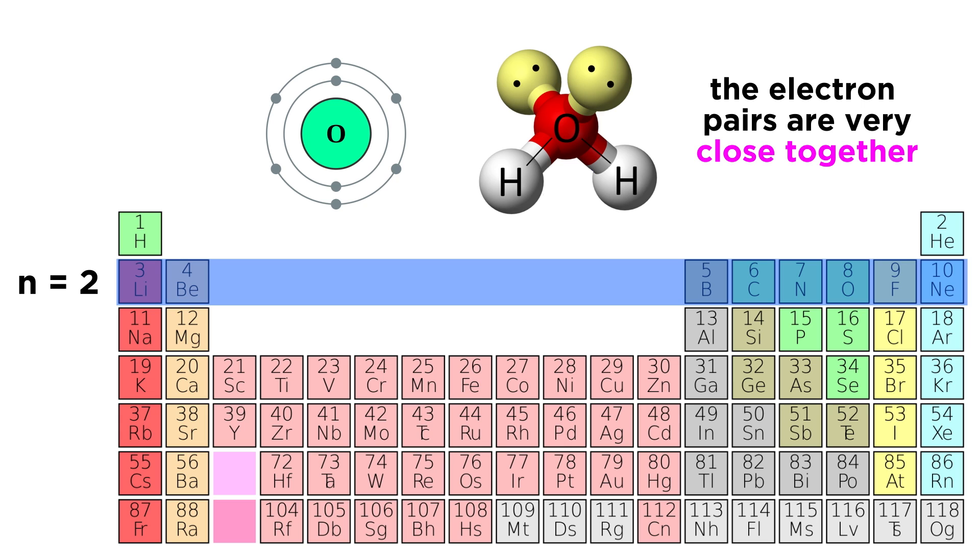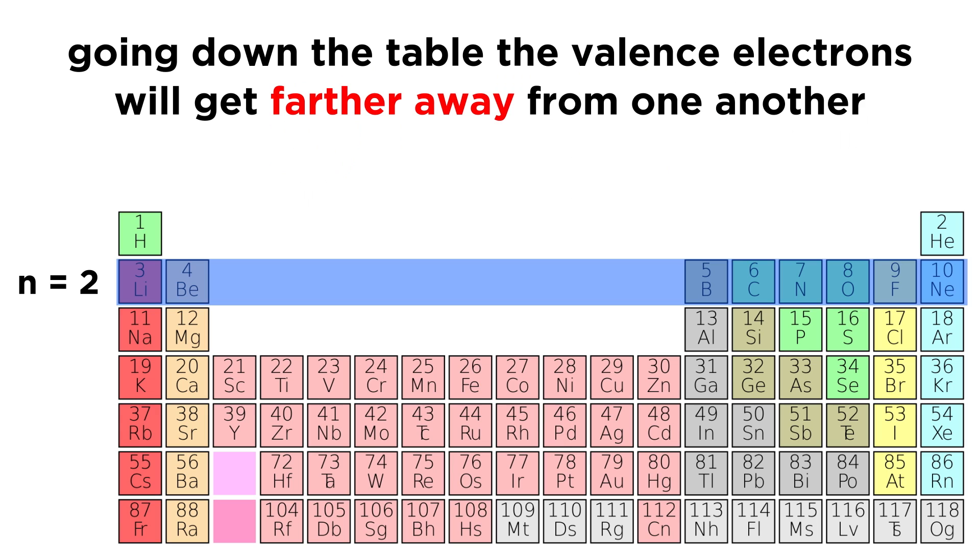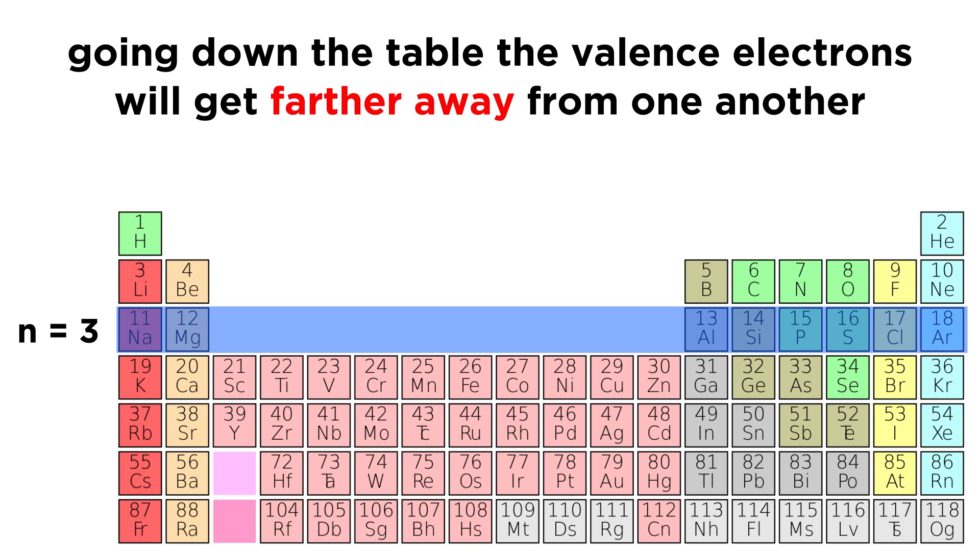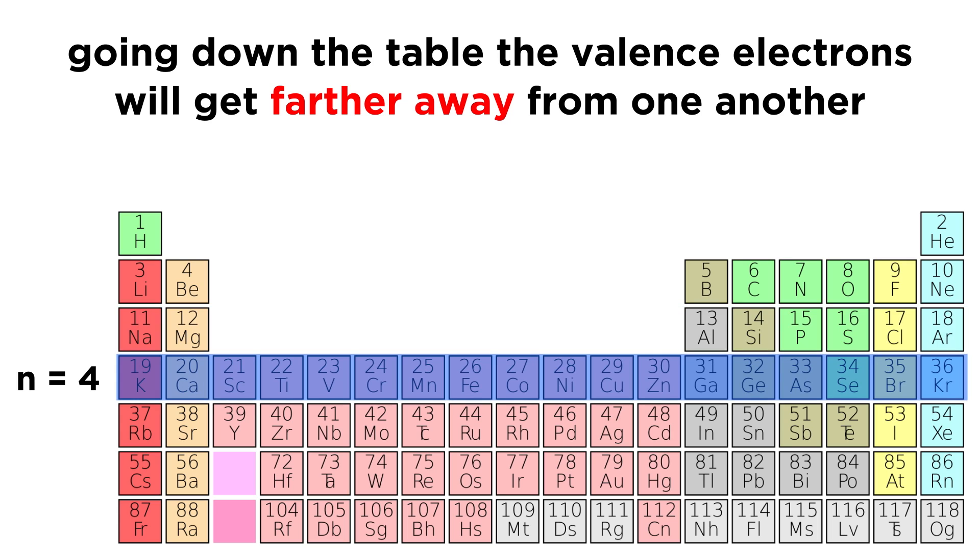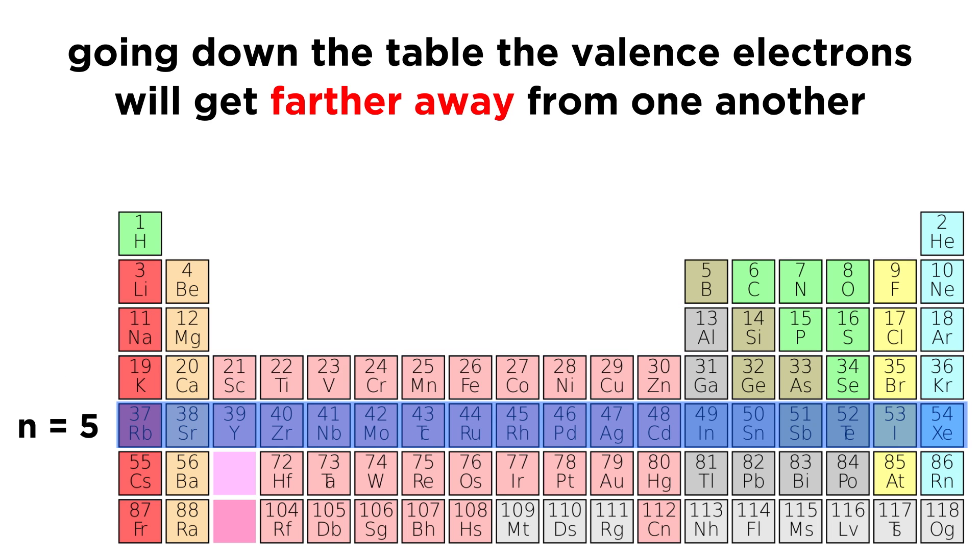But the farther out we go, or the greater the atomic radius of the central atom, the farther away the valence electrons will be from one another, and the less pronounced the repulsion will be.